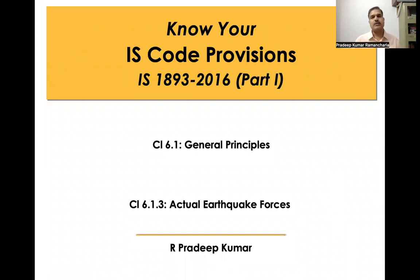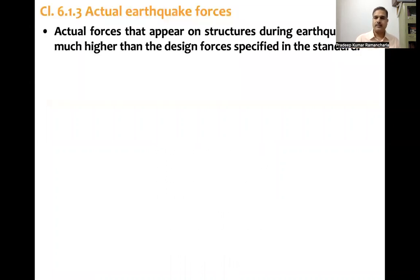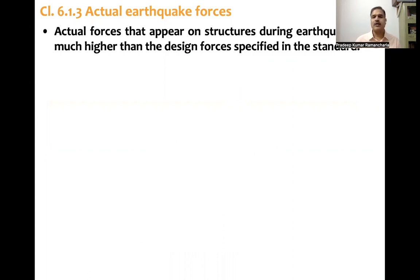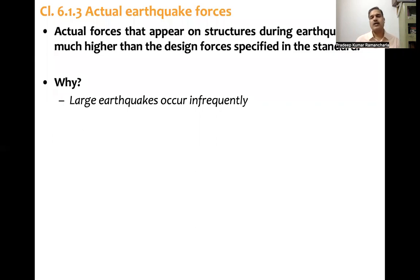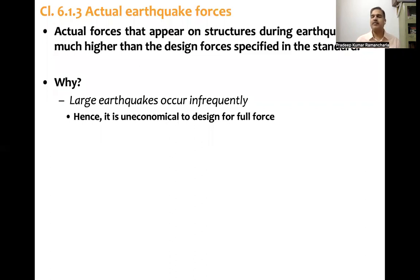Clause 6.1.3 covers actual earthquake forces experienced by structures. The code states that actual forces appearing on structures during earthquakes are much higher than the design forces specified in the standard. The main reason is that large earthquakes occur infrequently, and hence it is uneconomical to design for the full force.